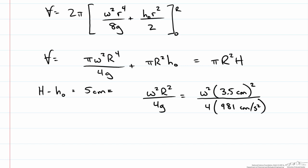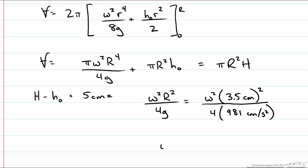This allows us to solve for ω, and we should get for ω 40 radians per second, which is approximately equal to 6.4 revolutions per second. So that is the maximum rotational velocity that we could achieve without losing any fluid from the mug.